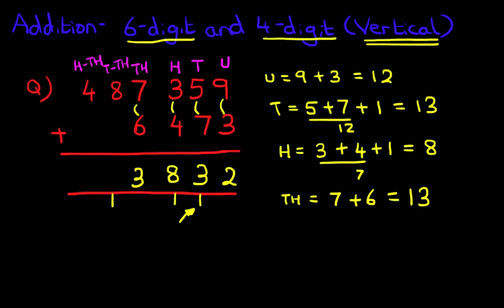And the next one is the ten thousands. We've got eight plus zero plus one, so eight plus zero plus one is nine.